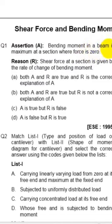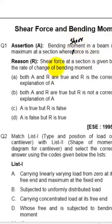Second question: Bending moment in a beam is maximum at a section where shear force is 0. Shear force at a section is given by the rate of change of bending moment.